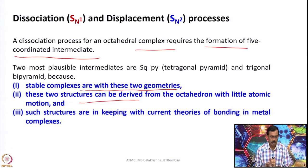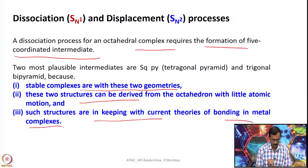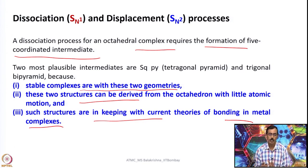Such structures are in keeping with current theories of bonding in metal complexes, and we also have experimental evidence that these two are the preferred geometries. Furthermore, the stereochemical consequences — after isolating various optical or geometrical isomers produced — can also inform us about which geometry and which intermediate was adopted in the substitution reaction, and hence provide information about the mechanistic pathway, whether dissociative or associative.